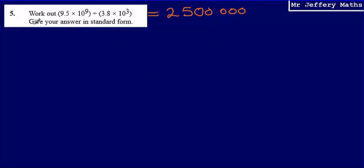And all that we now need to do is give our answer in standard form. So in order to do that, we're going to choose a number between 1 and 10, which in this case is going to be 2.5, to represent 2.5 million. So it's 2.5 multiplied by 10 to the power of, and then just count from the